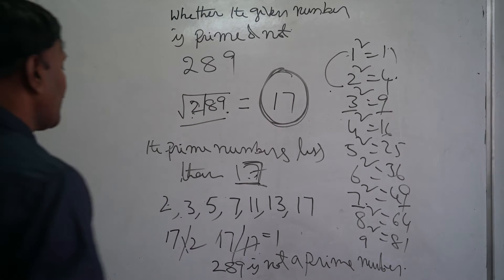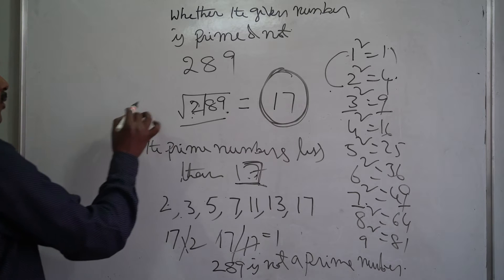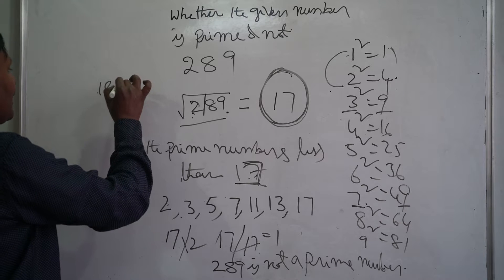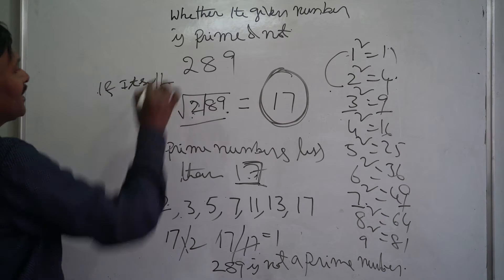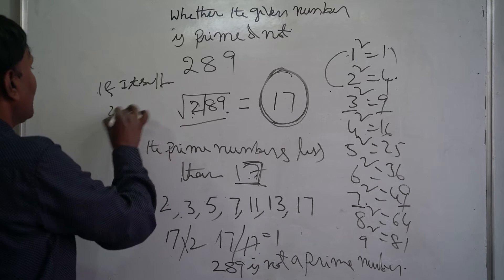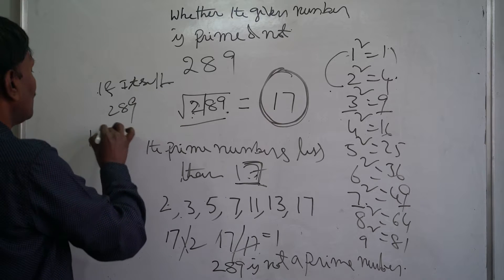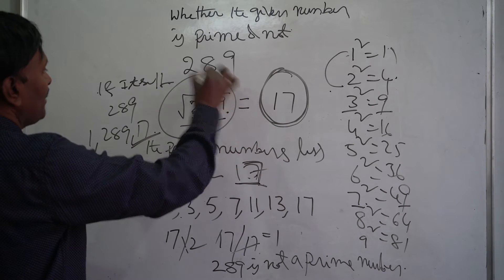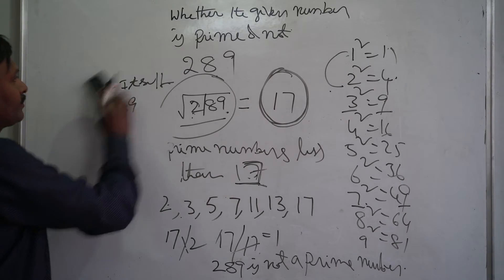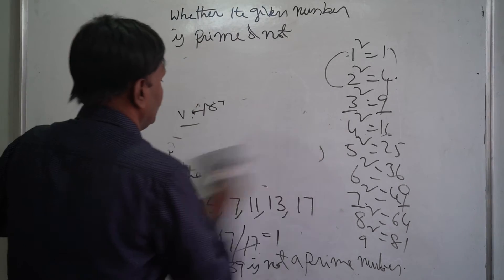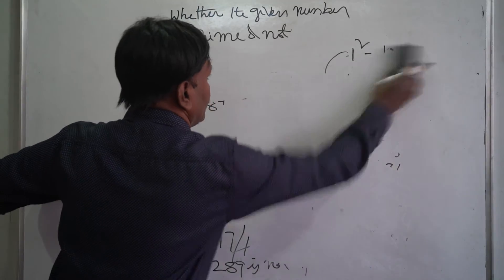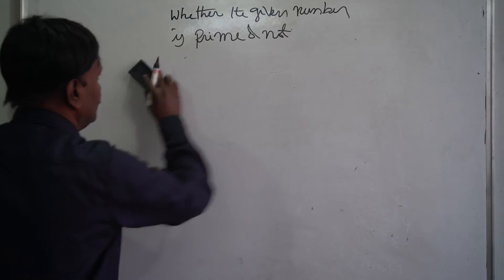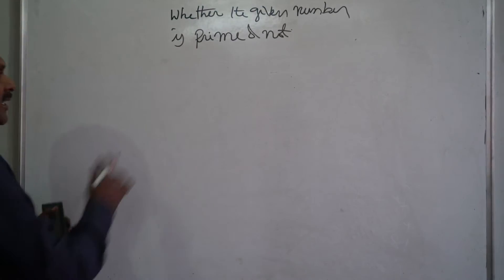So 289 is not a prime number. We know the definition: a number which is divisible by 1 and itself only is prime. But 289 is divisible by 1, 17, and 289 — it means 289 is not a prime number.